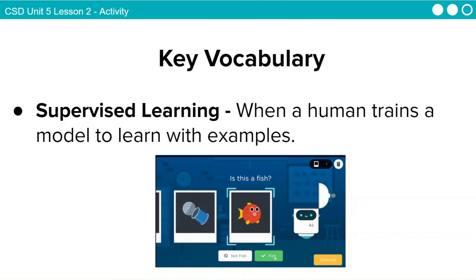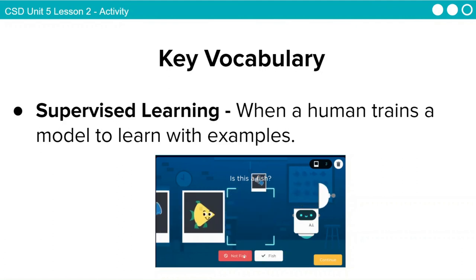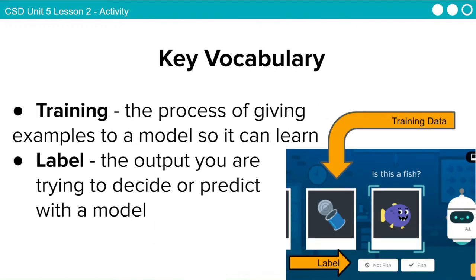Here's another key vocabulary word, supervised learning, when a human trains a model to learn with examples. We've got training, which is the process of giving examples to a model so it can learn, and label the output you are trying to decide or predict with the model. Here's a graphic that kind of shows you the training data, the label, and this is all part of supervised learning.